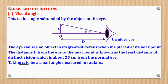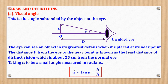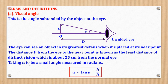Taking alpha to be a small angle measured in radians, alpha approximates to tan alpha, which is opposite over adjacent, which is H over D. Note that this only holds if alpha is a small angle and measured in radians. This formula shall be used frequently.